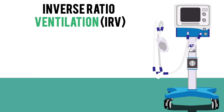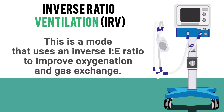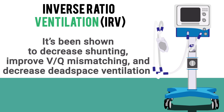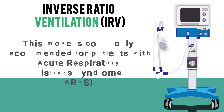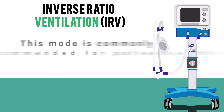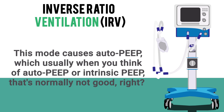Next we have IRV, or inverse ratio ventilation. This is a mode that uses an inverse I:E ratio to improve oxygenation and gas exchange. It has been shown to decrease shunting, improve V/Q mismatching, and decrease dead space ventilation. This mode is commonly recommended for patients with acute respiratory distress syndrome, or ARDS. This mode actually causes auto-PEEP, which normally is not considered a good thing.